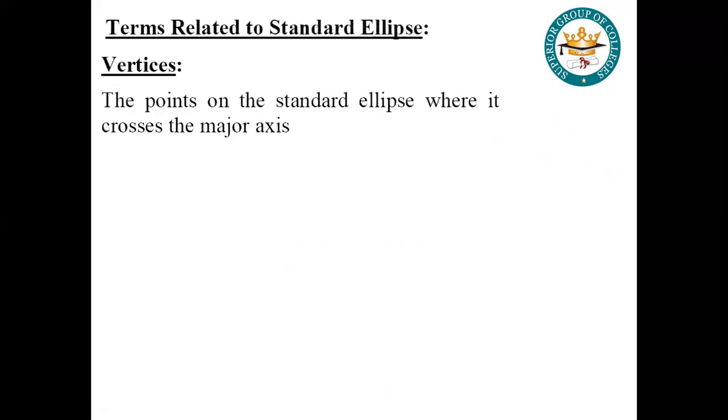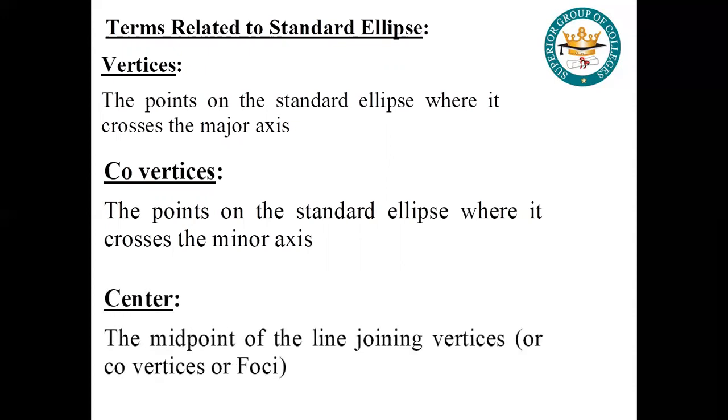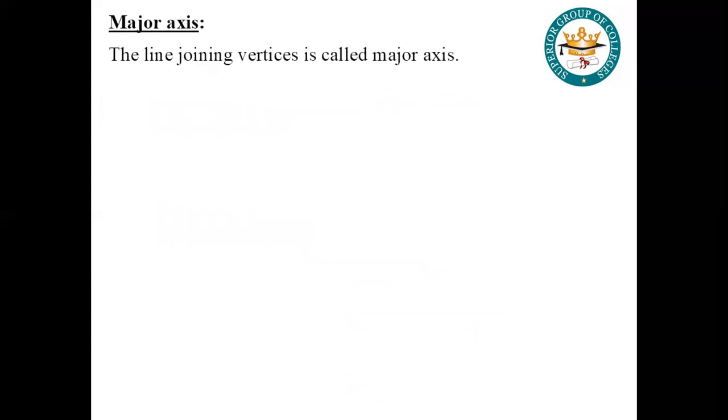The first definition: vertices are the points on the standard ellipse where it crosses the major axis. Co-vertices are the points on the standard ellipse where it crosses the minor axis. The center is the midpoint of the line joining vertices or co-vertices. Major axis is the line joining the vertices.